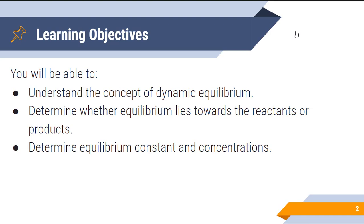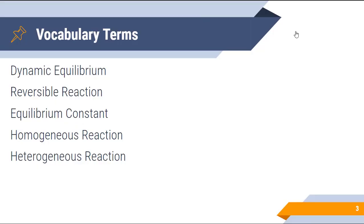So let's take a look at our learning objectives. For today, you should be able to understand the concept of dynamic equilibrium. You should also be able to determine whether equilibrium lies towards the reactants or products. And then you should also be able to determine equilibrium constant and concentrations today. A few new vocabulary terms for us today: dynamic equilibrium, reversible reaction, equilibrium constant, homogeneous reaction, and heterogeneous reactions.